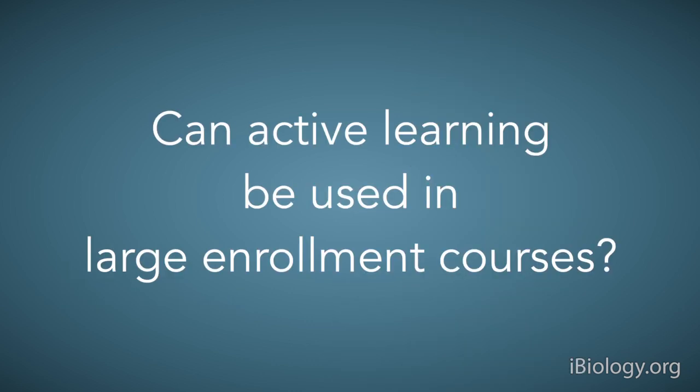My first attempt at problem-based learning was in a large enrollment classroom with an amphitheater-type setting — tiered seating and fixed seats with pads. The advice I got was: if your class doesn't fill the room, get a room that's bigger than you really need and leave every second row empty so you can walk down the row and access the groups. The groups would be students in the first row and students in the second row, who turn around and have a conversation.